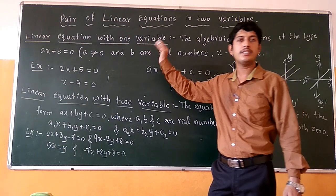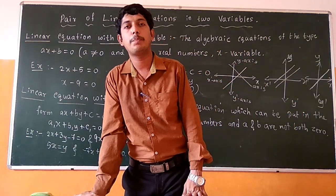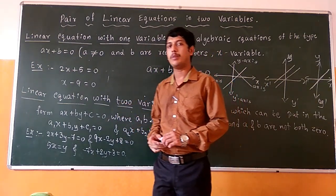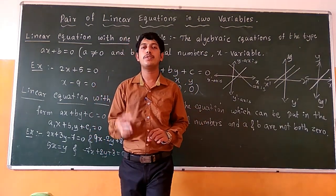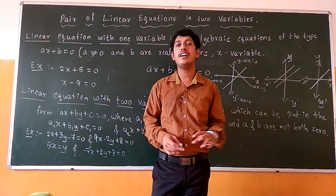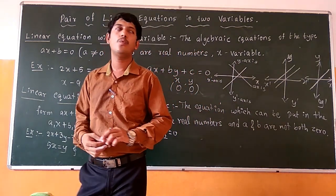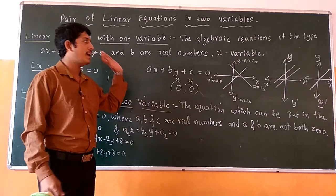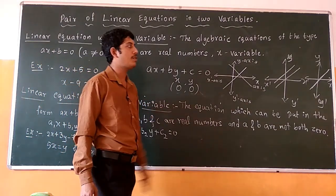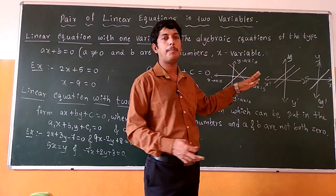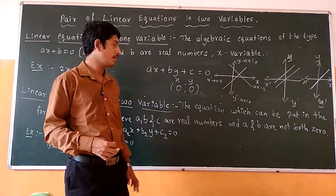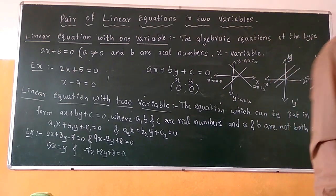So, linear equation in one variable means the equation which is in the form of ax plus b equals to 0, where a, b, and c are real numbers and x is the variable. Linear equation in two variables is the equation in the form of ax plus by plus c equals to 0, where a, b, and c are real numbers and x and y are the variable terms. In the graph we are getting three kinds: they are intersecting, they are parallel to each other, or they are overlapping — also called coincident. Thank you.